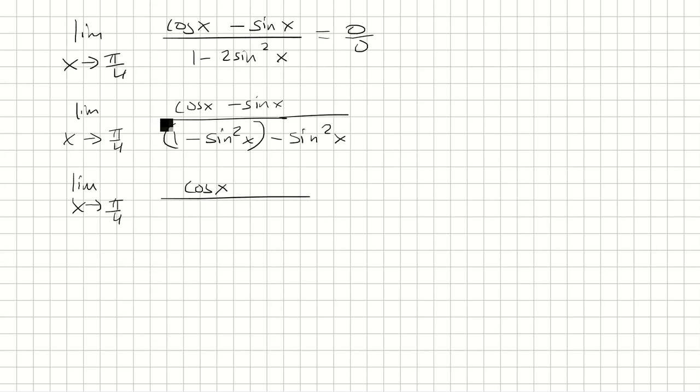So we have cos x - sin x on top, and on the bottom is cos²x - sin²x, which can be rewritten as (cos x - sin x)(cos x + sin x).